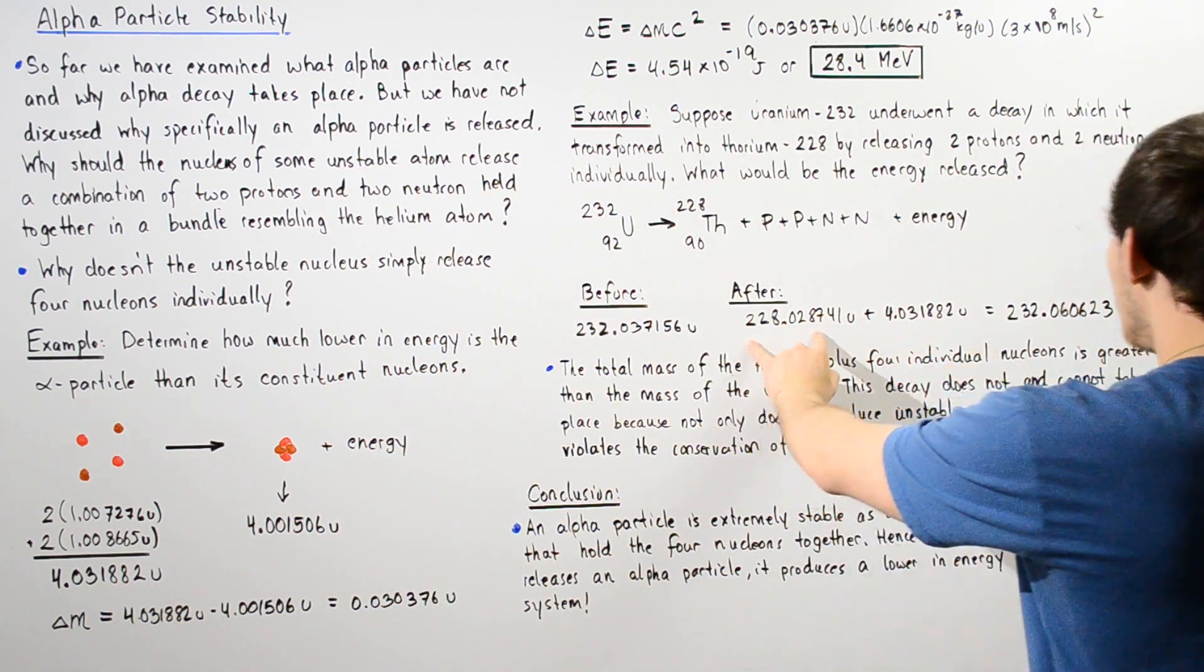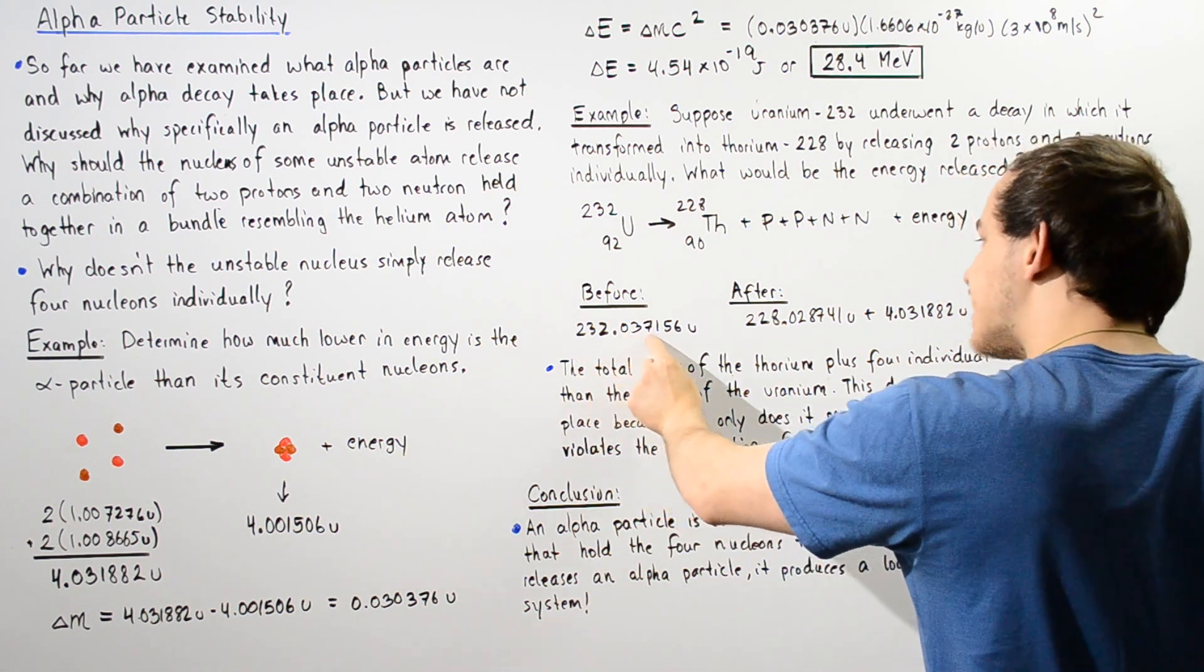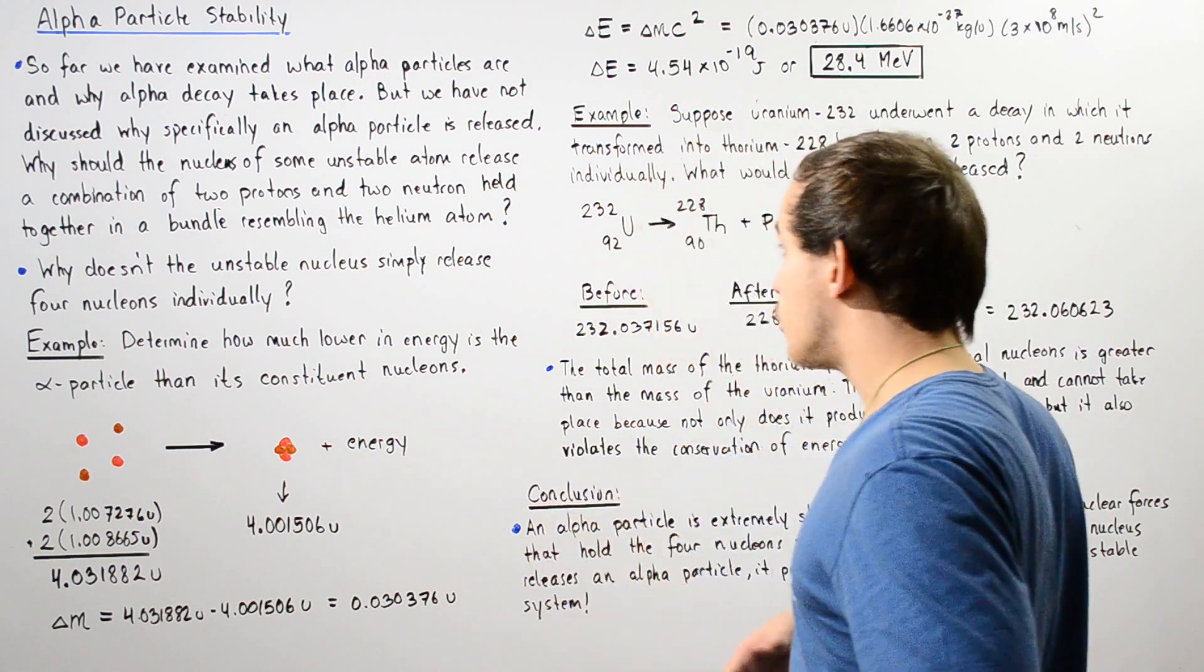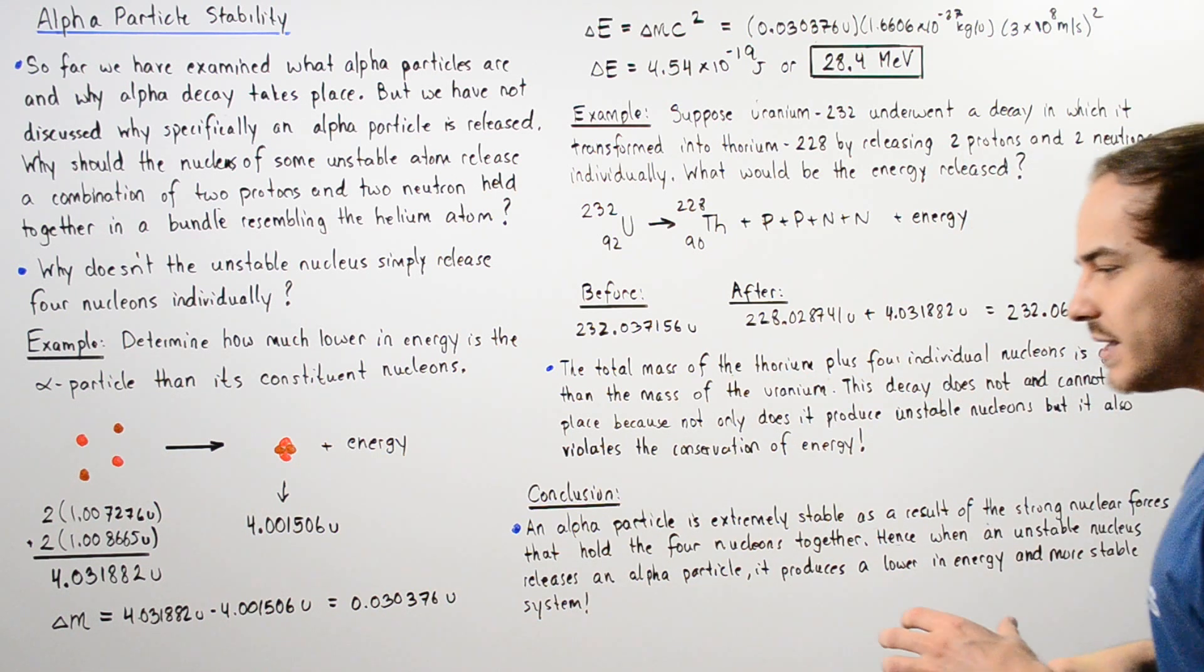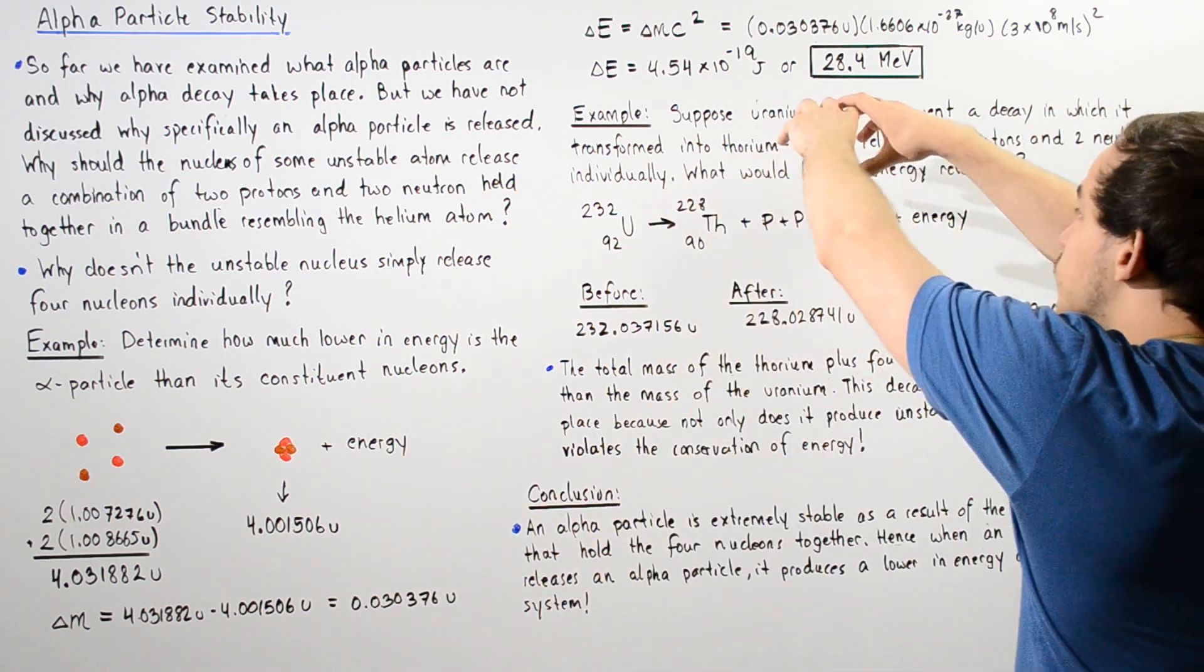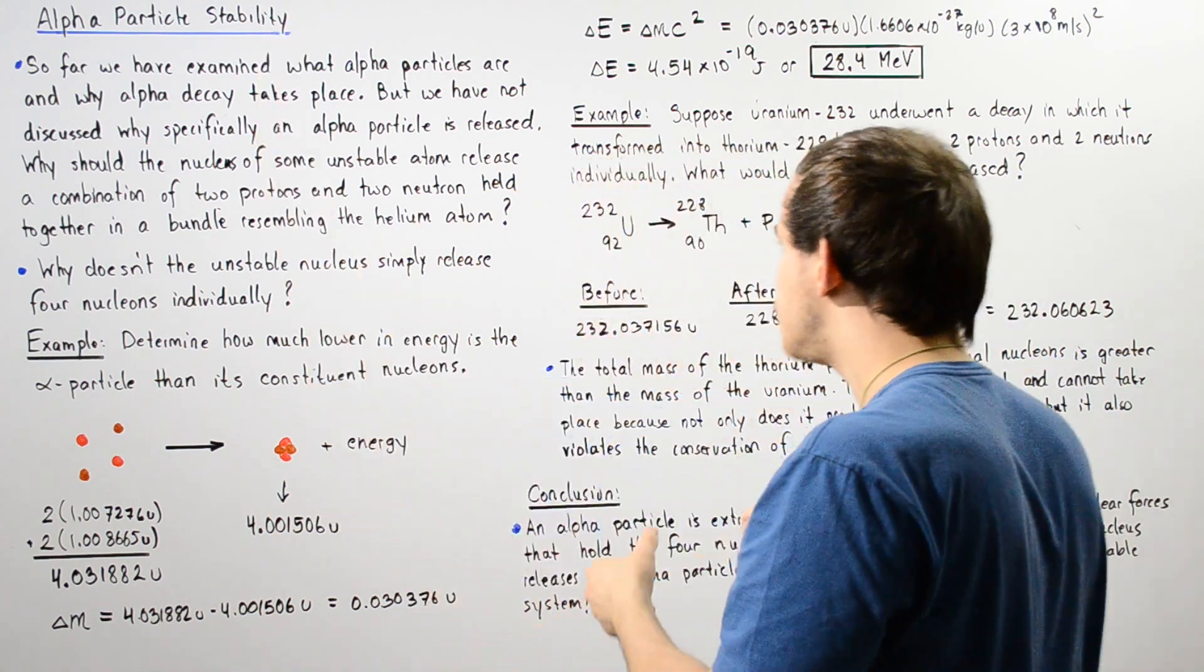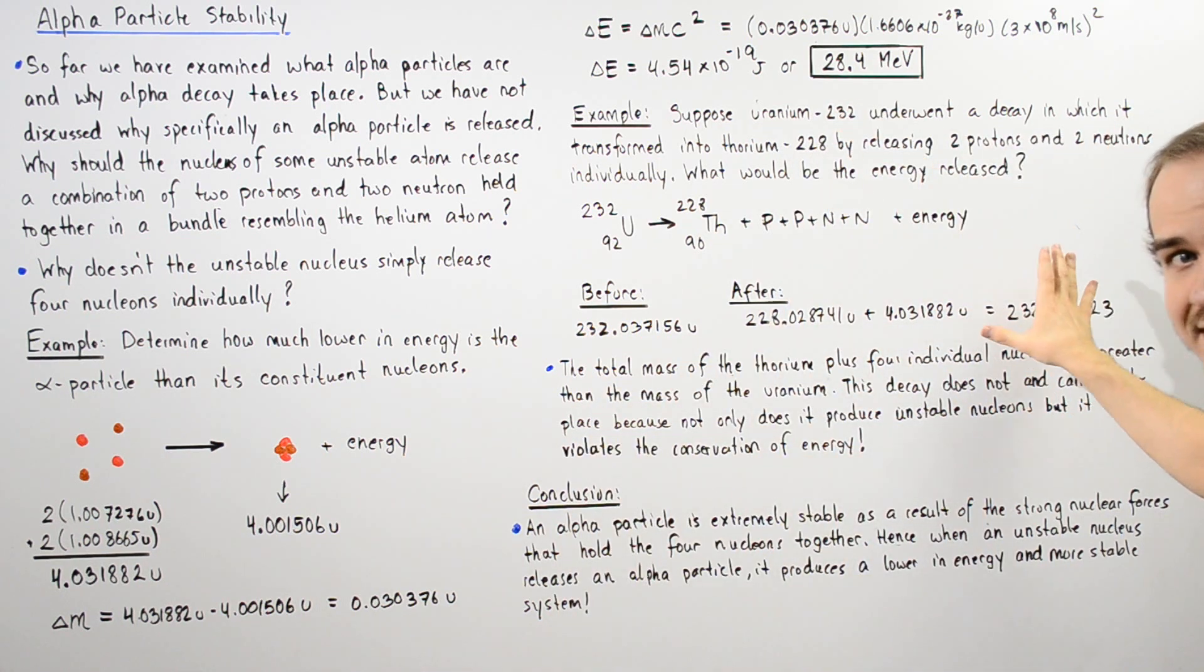So, if we take the sum of this, we get this. And notice that 232.060623 is greater than 232.037156. And that basically means that the mass of the reactants is less than the mass of our products. And because of the energy mass equivalence, we see that the products together are less stable and higher in energy than our reactants. And so that means energy is not released.